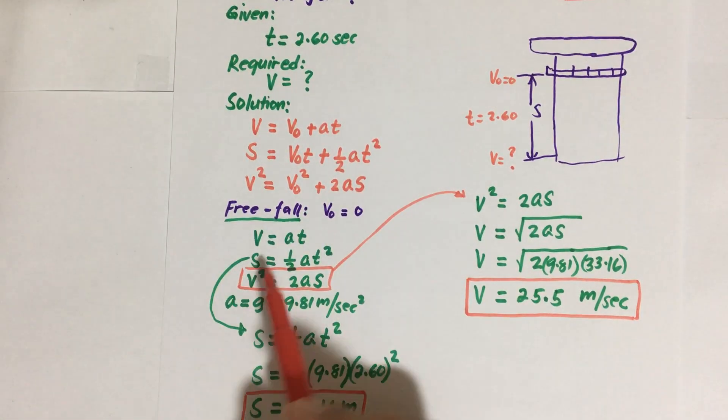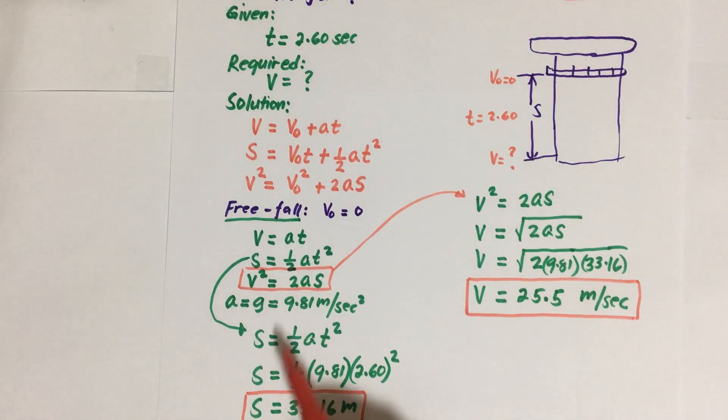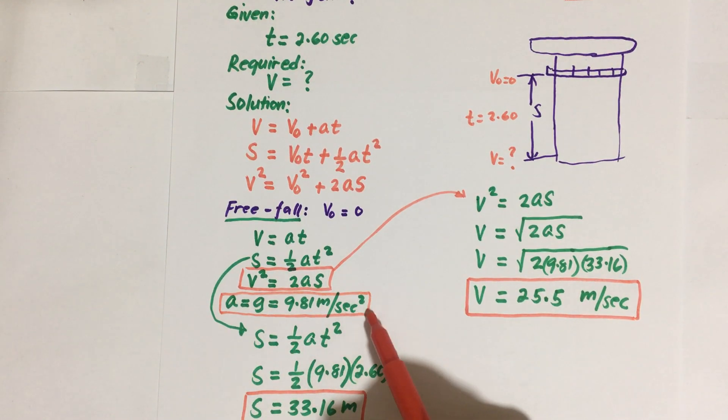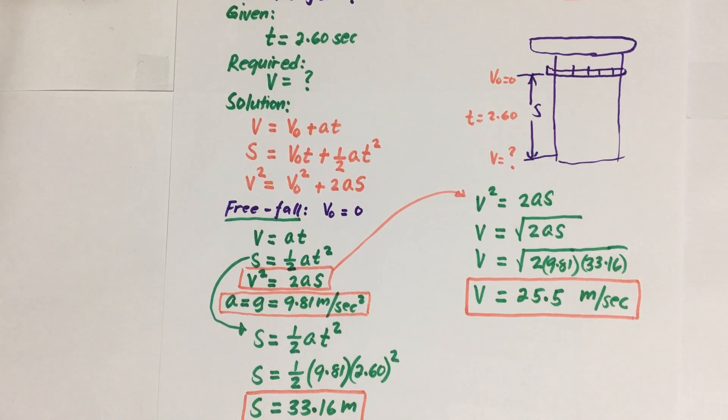You have to have this new formula that you need to use, and then also this constant, now this gravitational acceleration that is equal to 9.81 meters per second. That is in terms of meters, but if the given is in terms of feet, so you have to use the equivalent acceleration in terms of feet. I think that is 32.2 feet per second squared.